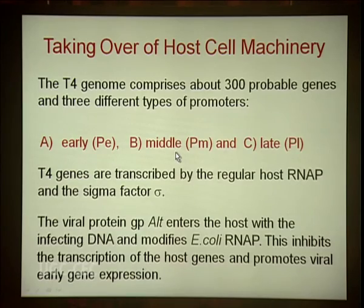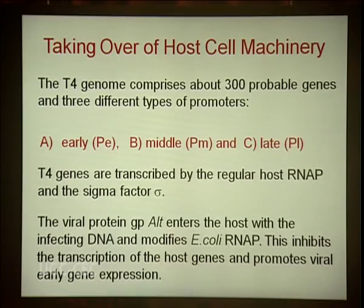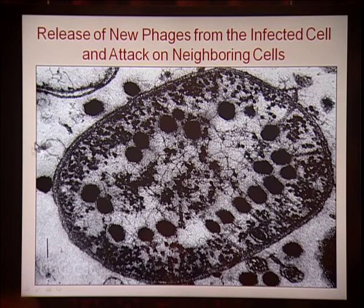The middle promoter controls expression of genes for T4 genome replication, and the late promoter controls genes for synthesis of structural proteins. Once the T4 genome has been replicated and structural proteins synthesized, assembly starts. Structural proteins form the capsid, the replicated genome is inserted into the icosahedral head, and complete phage is produced. When about 300 new phages accumulate inside an infected E. coli cell, they lyse the host cell. After lysis, the newly released phages attack neighboring E. coli cells.